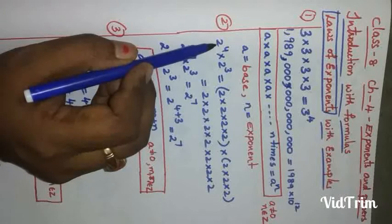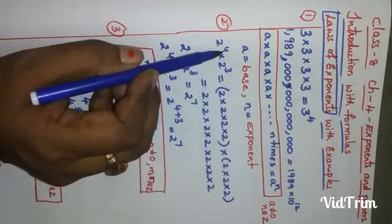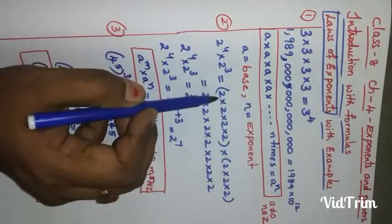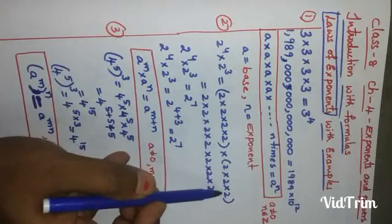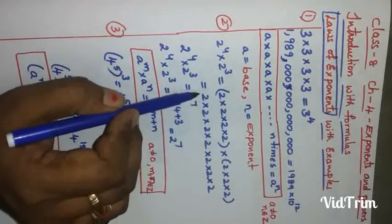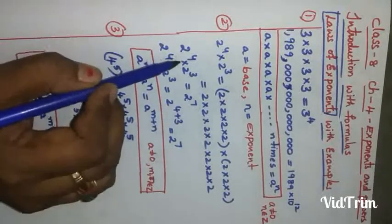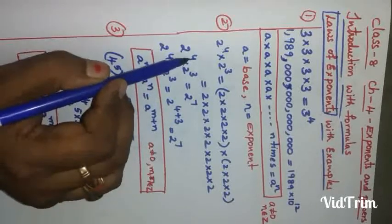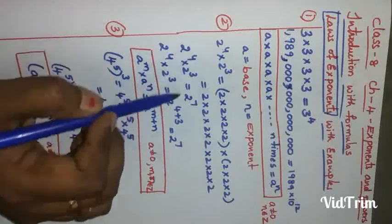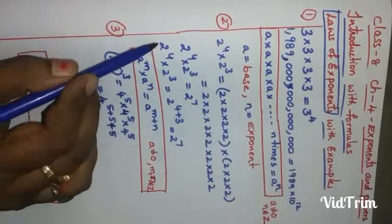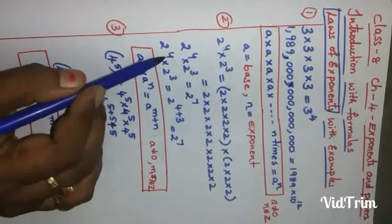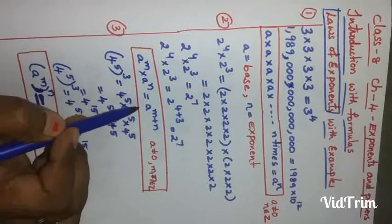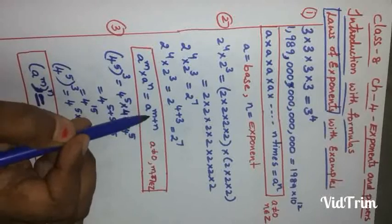Coming to the second formula: when both bases are the same but powers are different. See — 2 to the power of 4 means 2 multiplied 4 times, and 2 to the power of 3 means 2 multiplied 3 times. If we combine them, 2 is multiplied 7 times total. So 2^4 into 2^3 equals 2^7. We got 7 by adding the powers: 4 plus 3. So when bases are the same, we add the powers: a^m × a^n = a^(m+n). Here a ≠ 0 and m, n belong to integers.